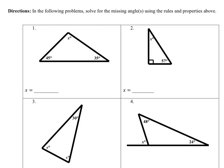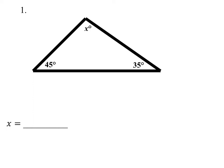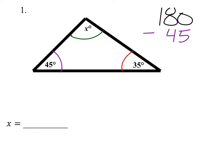For the following problem, solve for the missing angles using the rules and properties above. So here's what we know: if we took this angle — the 35 degrees, the 45 degrees, and the X degrees — and added them up, we should get 180 degrees. So that means if we subtract the two known angles, to figure out X we need to take out the 45 degrees and also the 35 degrees. The total will be however big that X angle is.